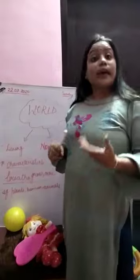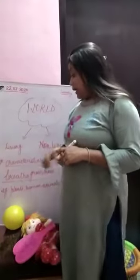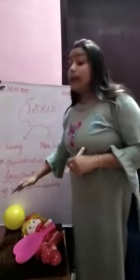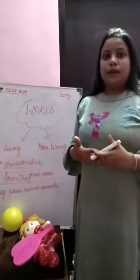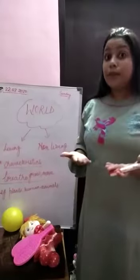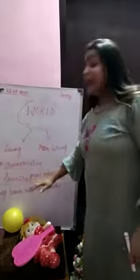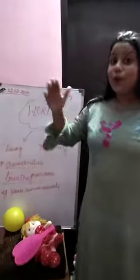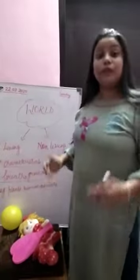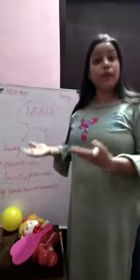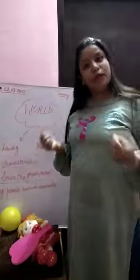Now, what are the characteristics of a living thing? A living thing can breathe — as we all breathe. A living thing can grow, and a living thing can move. We can move from one place to another place very easily.